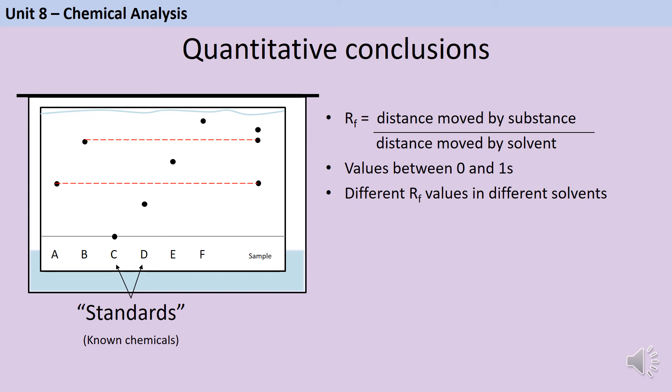So in order to work these out I'm going to need to measure the distance traveled by the substance and I'm going to measure from the start line to the very center of that dot. And then the distance traveled by the solvent. So we call that line that the solvent has got to the solvent front. And then I would divide the length of that blue arrow by the length of that green arrow and I would get a number between 0 and 1.